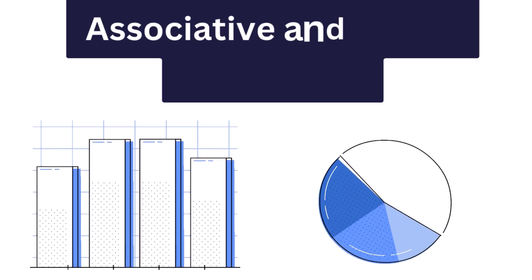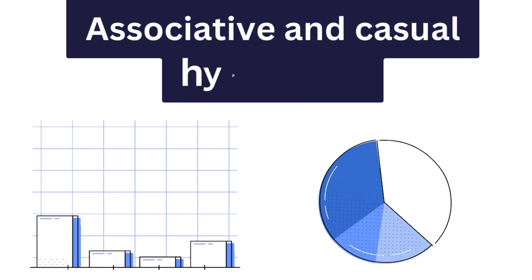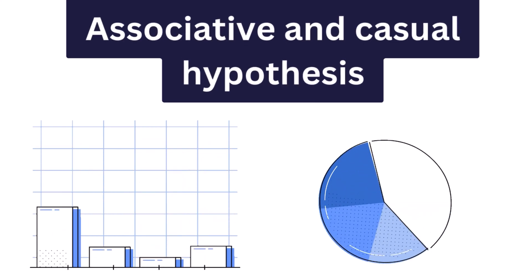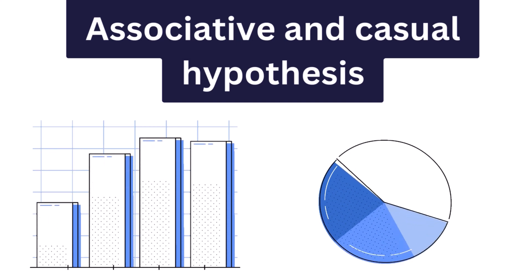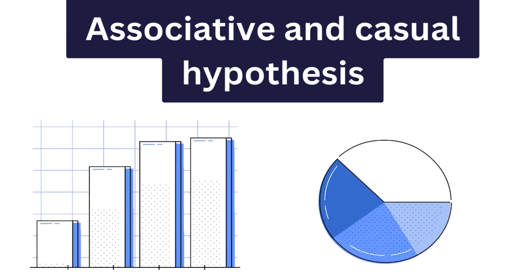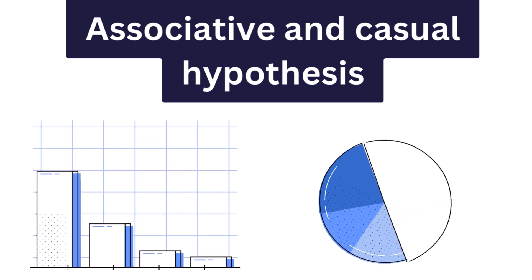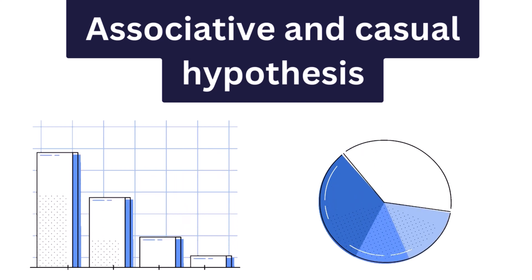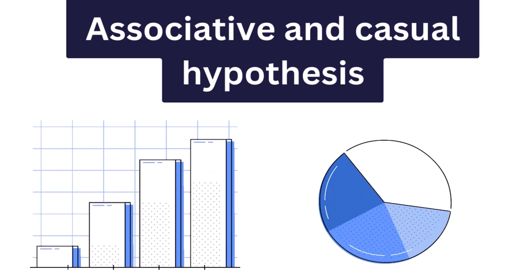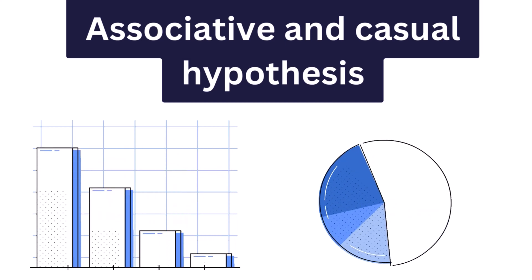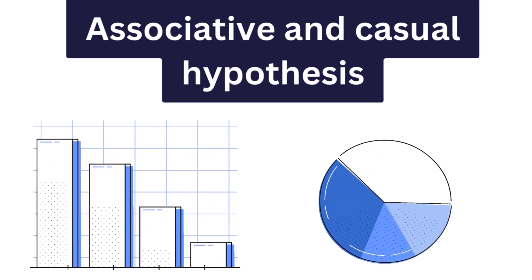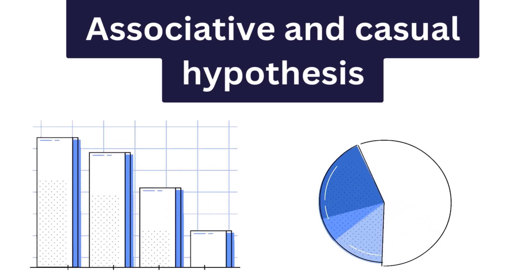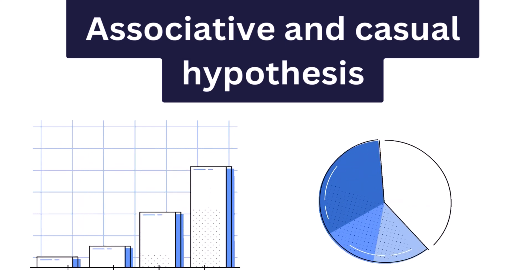Six, associative and causal hypothesis. Associative hypothesis occurs when there is a change in one variable resulting in a change in the other variable. Whereas the causal hypothesis proposes a cause-and-effect interaction between two or more variables.